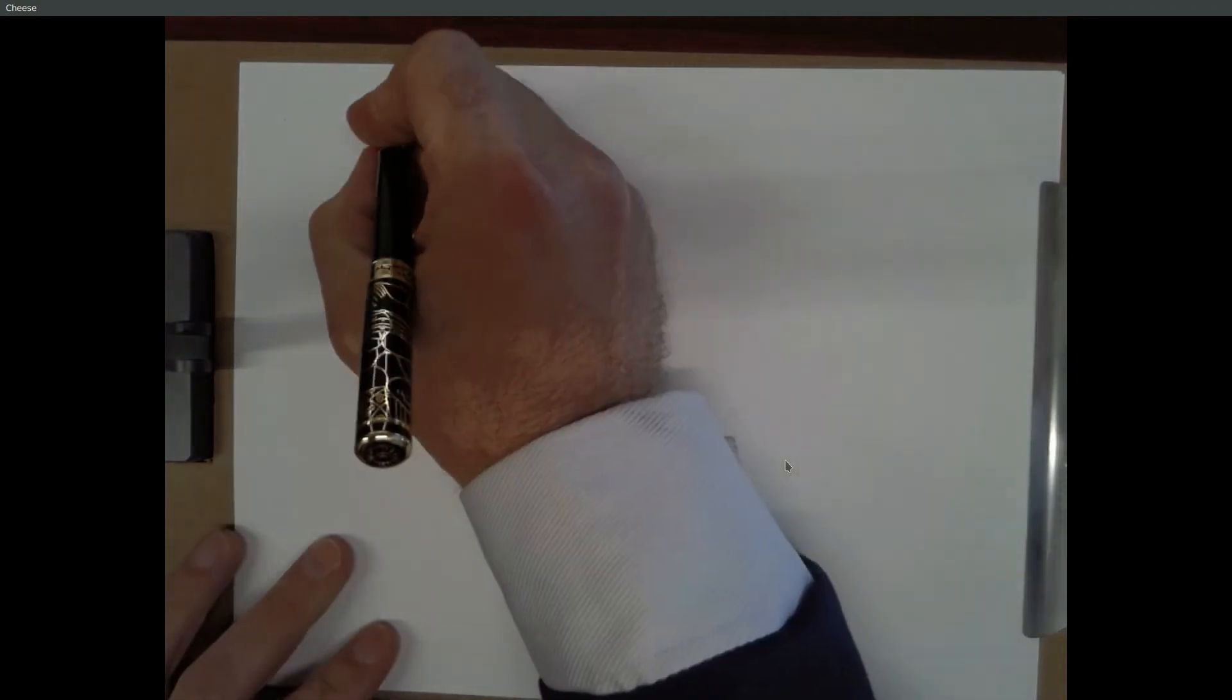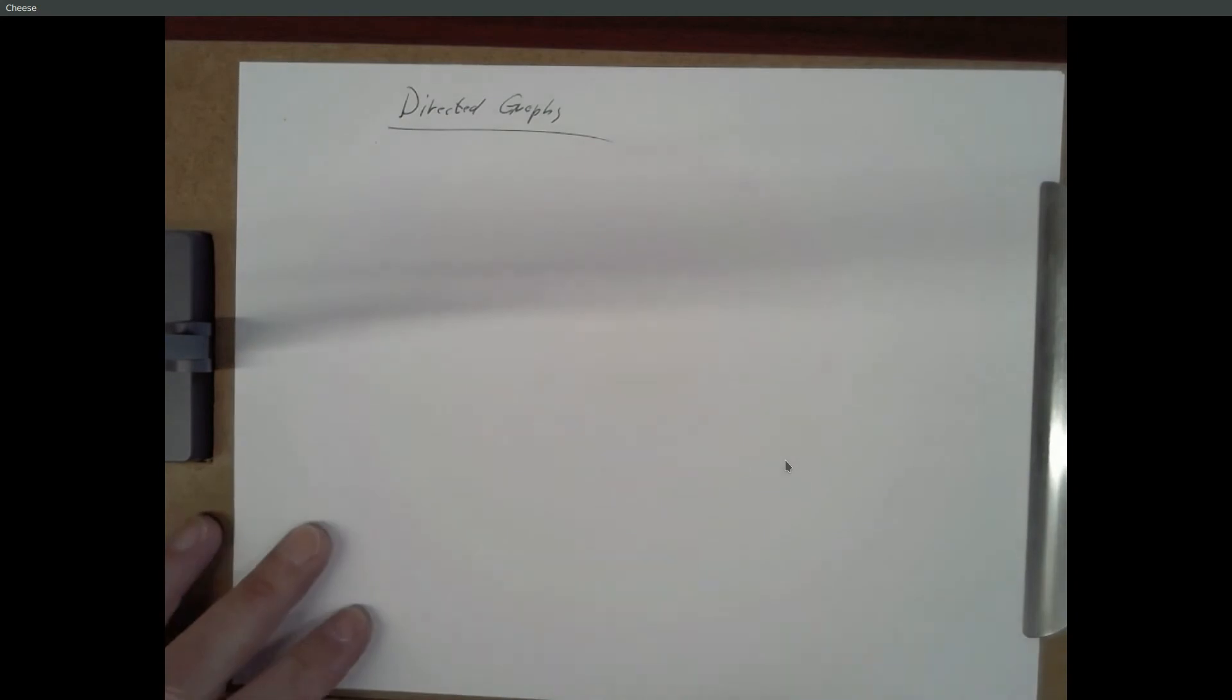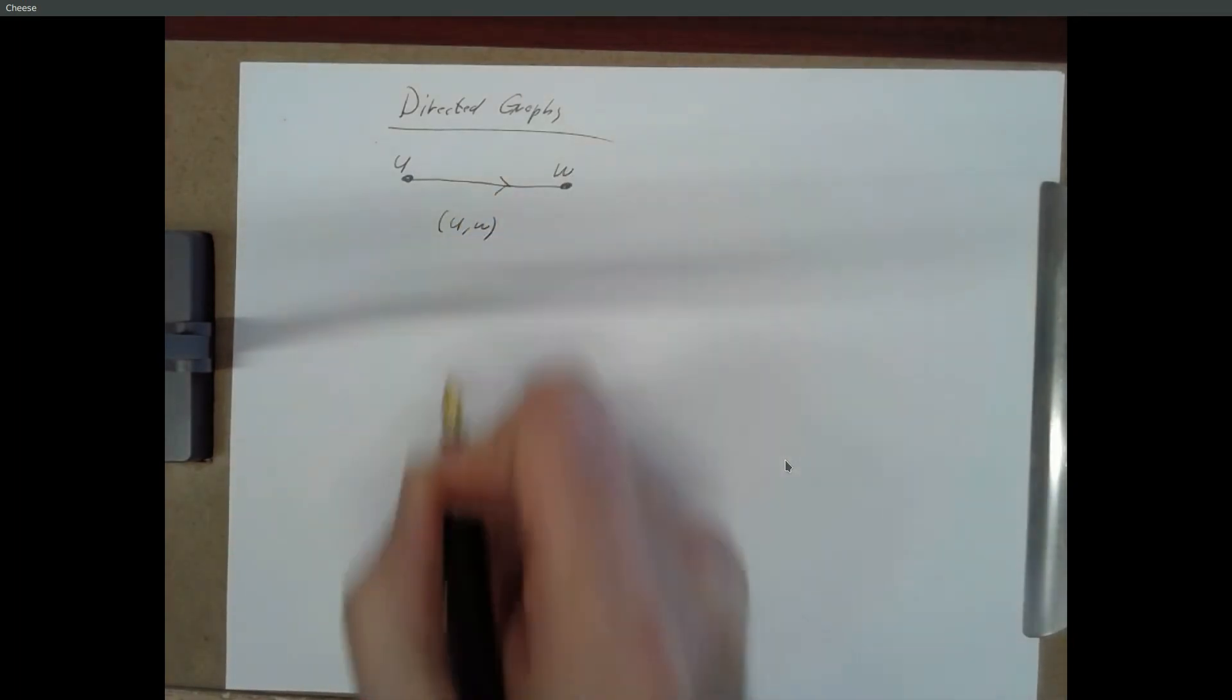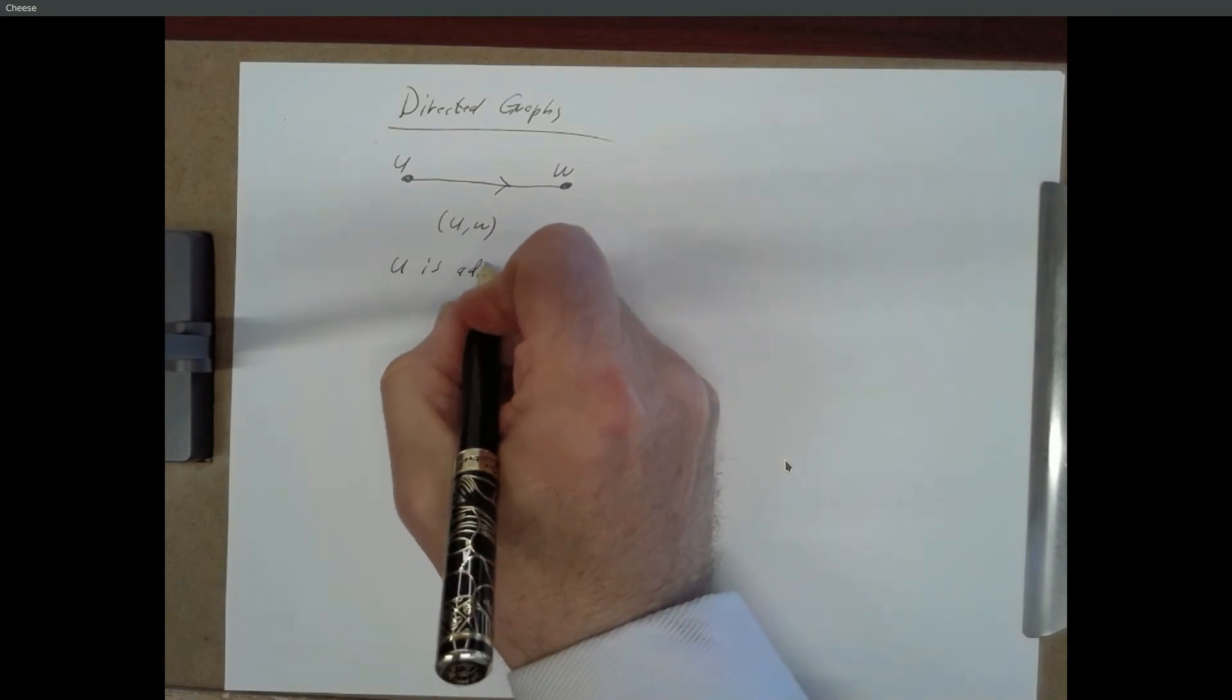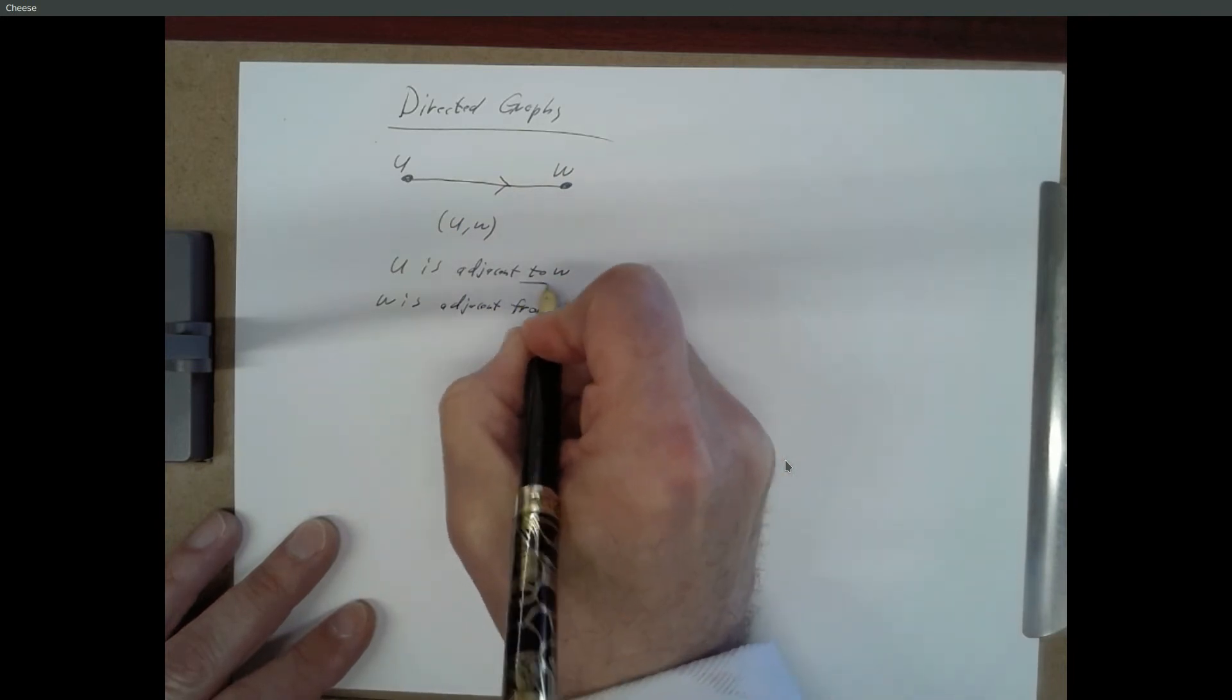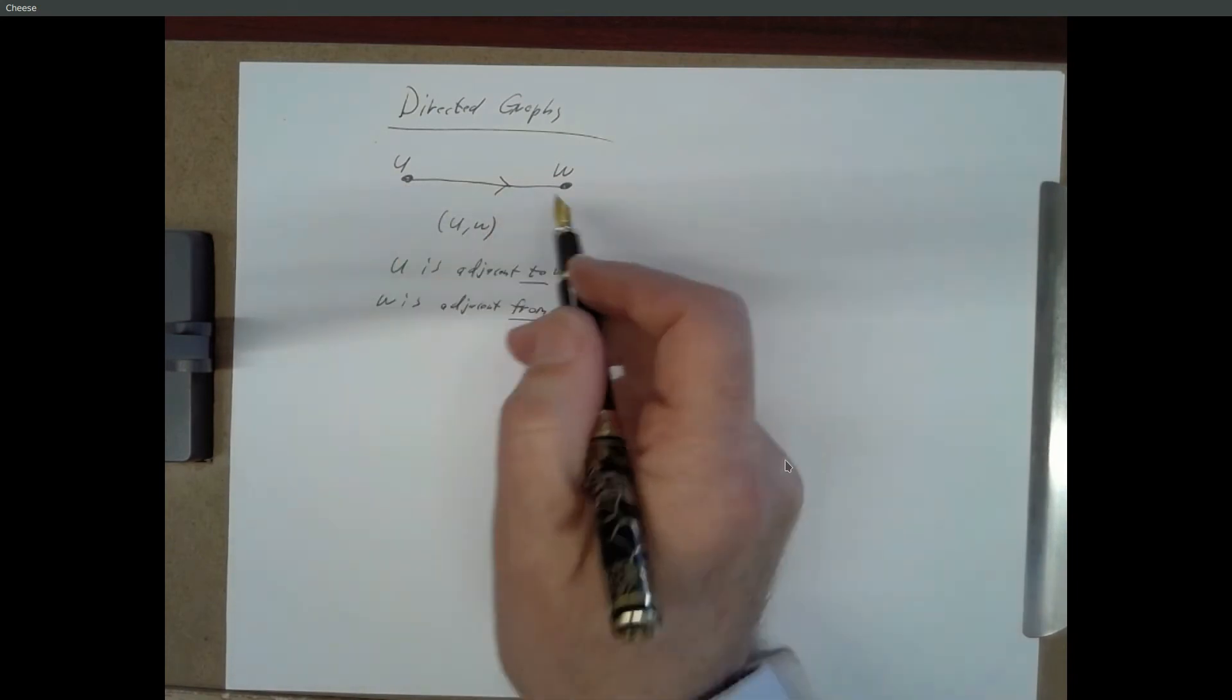Well, so this is for undirected graphs, but if we have directed graphs, we get something similar. So, for a directed graph, here's what we got. Suppose that we have an edge, like this, going from U to W. So this edge corresponds to the ordered pair U, W. So U is adjacent to W. We can also say W is adjacent from U. So U is adjacent to W because it's going to W. W is adjacent from U because the edge comes from U. And U, remember, is the initial vertex. W is the terminal vertex.